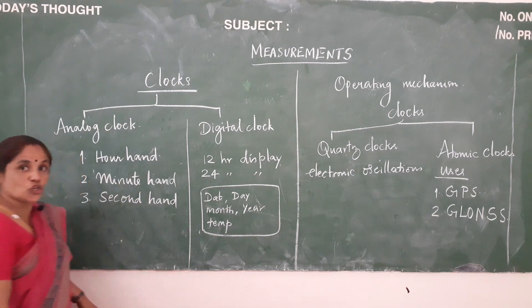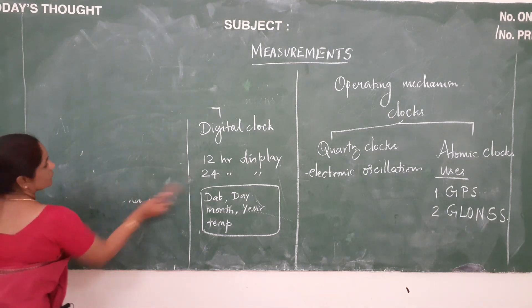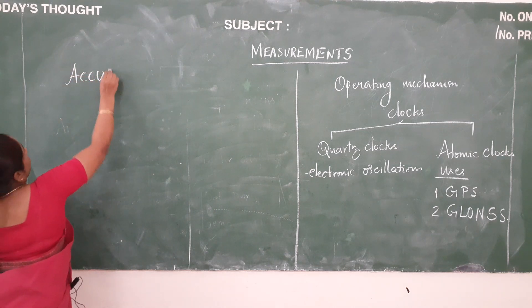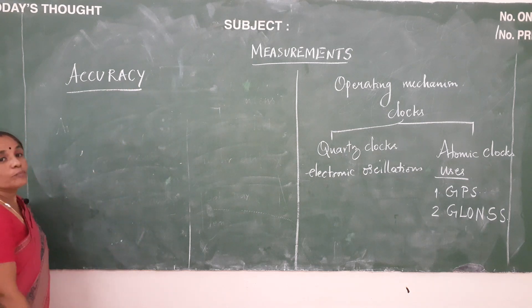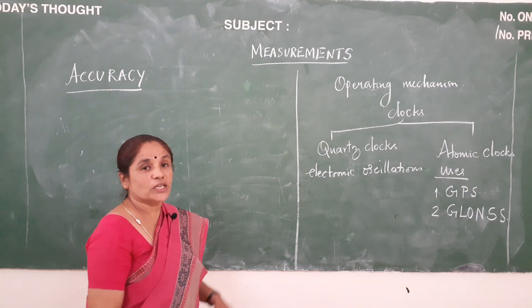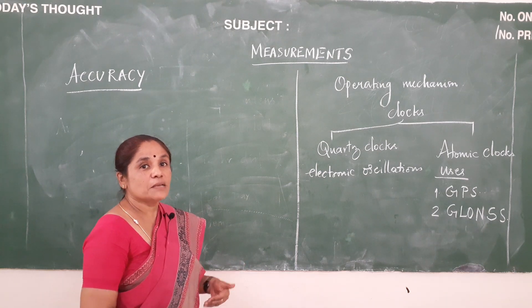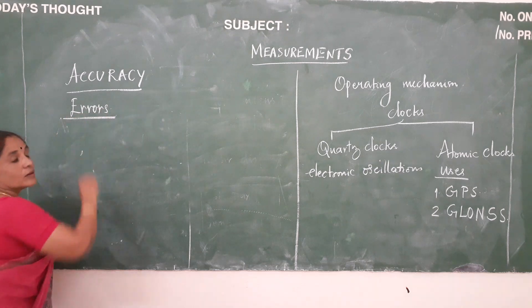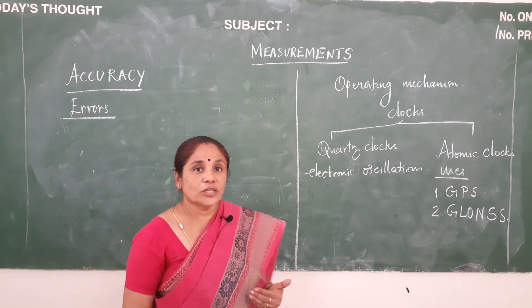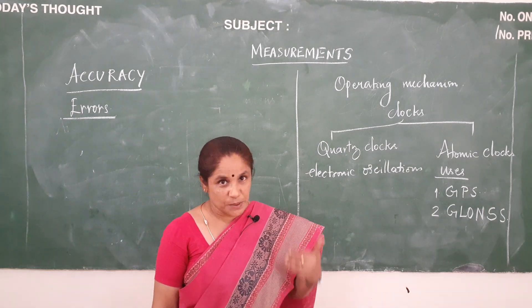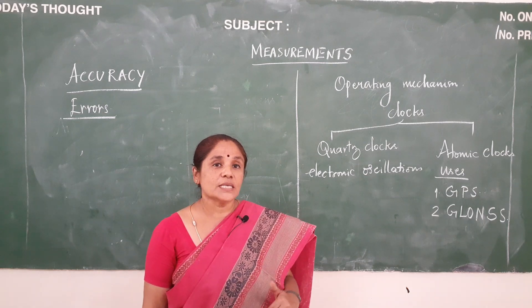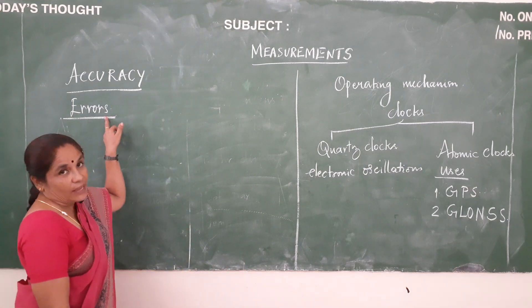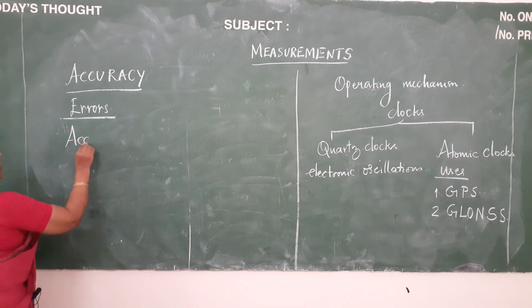Next we will move on to the next topic: accuracy in measurements. We know that measurements play a very important role in science and technology. Whenever we conduct an experiment, there may sometimes occur errors. When we conduct an experiment and record the observations, we call that the measured value or observed value. We also have another value which we call the real value or the true value. The difference between the measured value and the true value is the error.